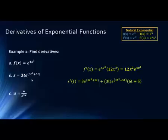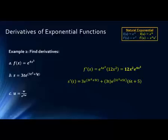We have the derivative of the first part — the derivative of 3t — which is simply 3, times the second, which is e to the 3t squared plus 5t, plus the derivative of the second part. That's the derivative of the exponential function. Remember, this is e to the 3t squared plus 5t, so e to that same exponent, times the derivative of the exponent, which is 6t plus 5. Bring the 2 down in front: 2 times 3 is 6t, drop the exponent by 1, plus the derivative of 5t which is 5, times the remaining piece, which is 3t.